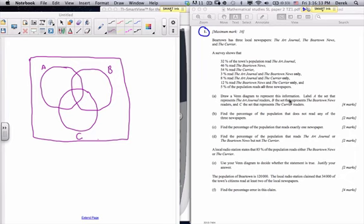It says draw a Venn diagram to represent the information. Label A for the Art Journal, B for the Beartown News, and C for the Courier readers. I've drawn that up here with the square box representing the Universal set, which would be all the Beartown population. Often with this, getting our central value, our middle value which is part of all three sets, is important. That would be this one over here—that's 5. 5% of the population read all three newspapers, so 5 goes in there.